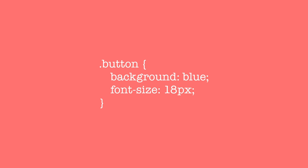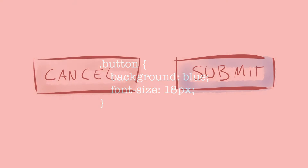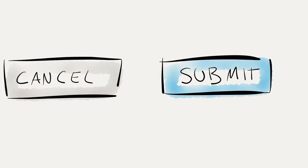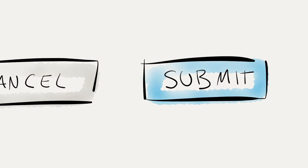So here's an entire style so that you can see the selector in context with the rest of the style. Here we are selecting all of the elements that have a class of Button and making their backgrounds blue and their font size 18 pixels. Easy enough, huh?